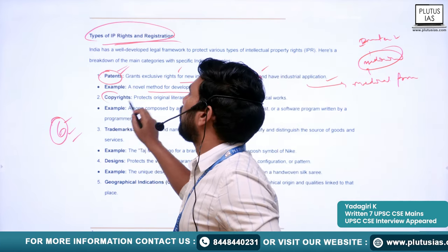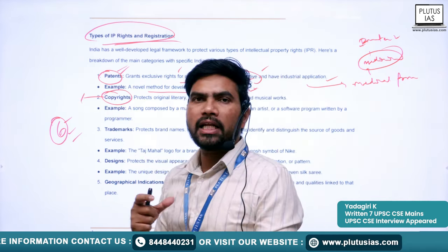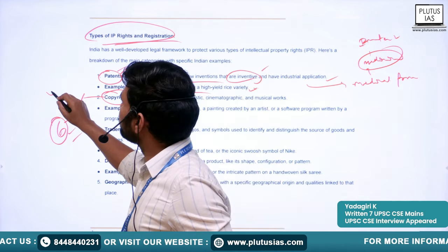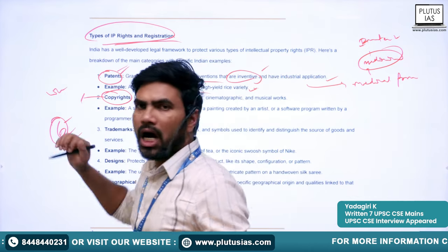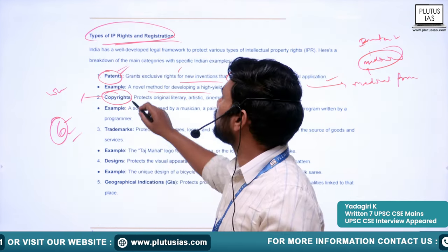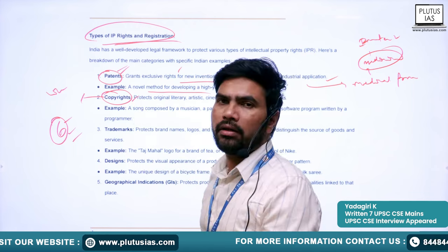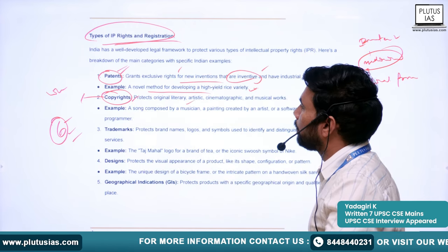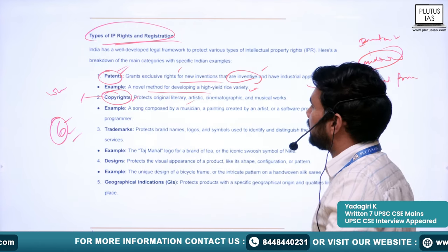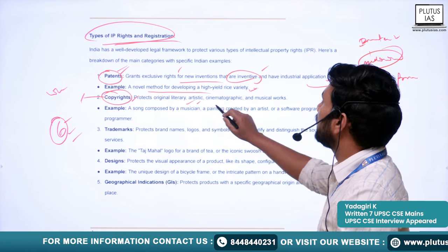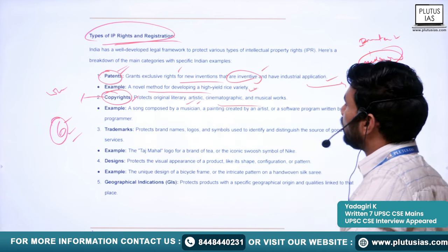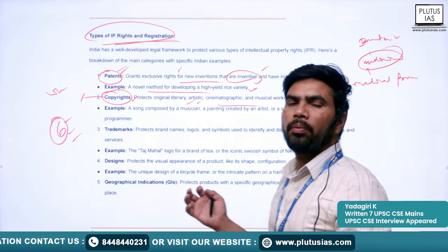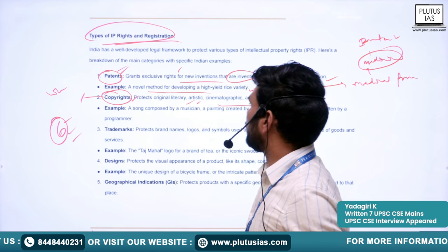The next type is copyright. Copyrights are given for literary and artistic works. Copyright protects original literary, artistic, cinematographic, and musical works.